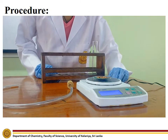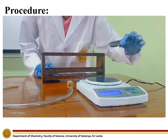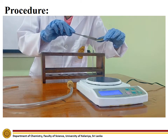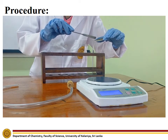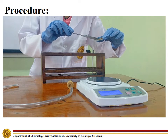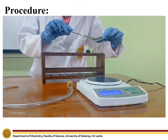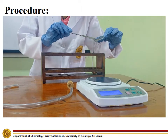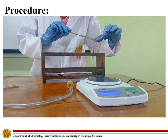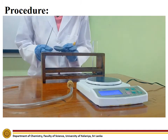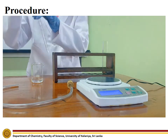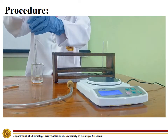First, measure about 5 grams of copper turnings using the electronic scale and put them into a boiling tube. Using a well-washed pipette, measure about 5 ml of concentrated nitric acid and add it to the boiling tube containing copper turnings.